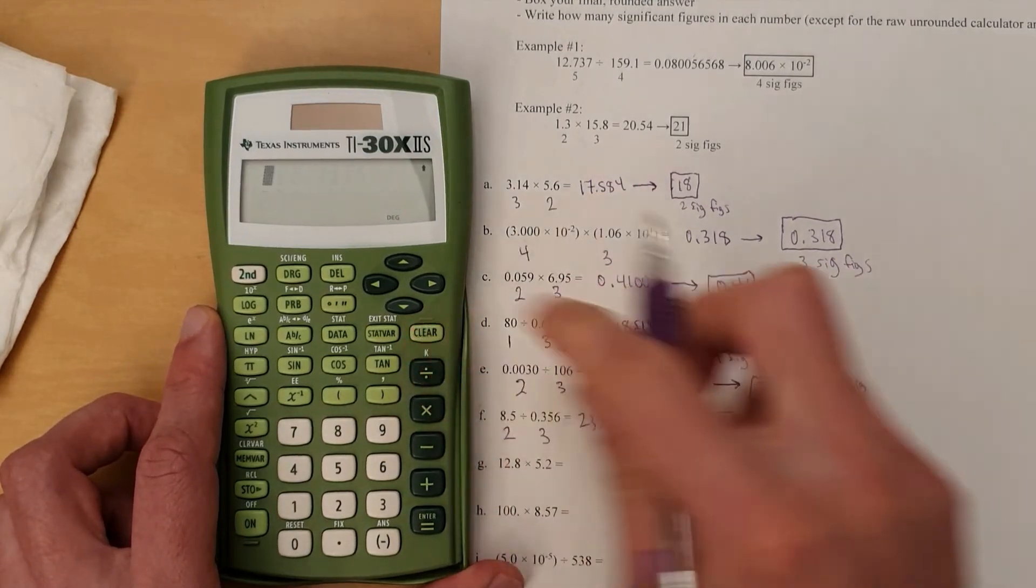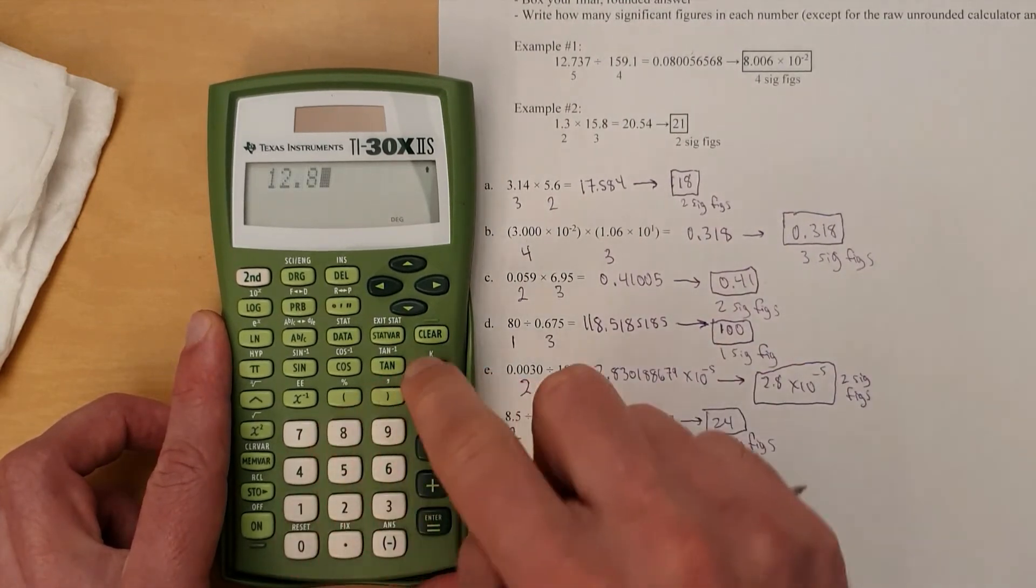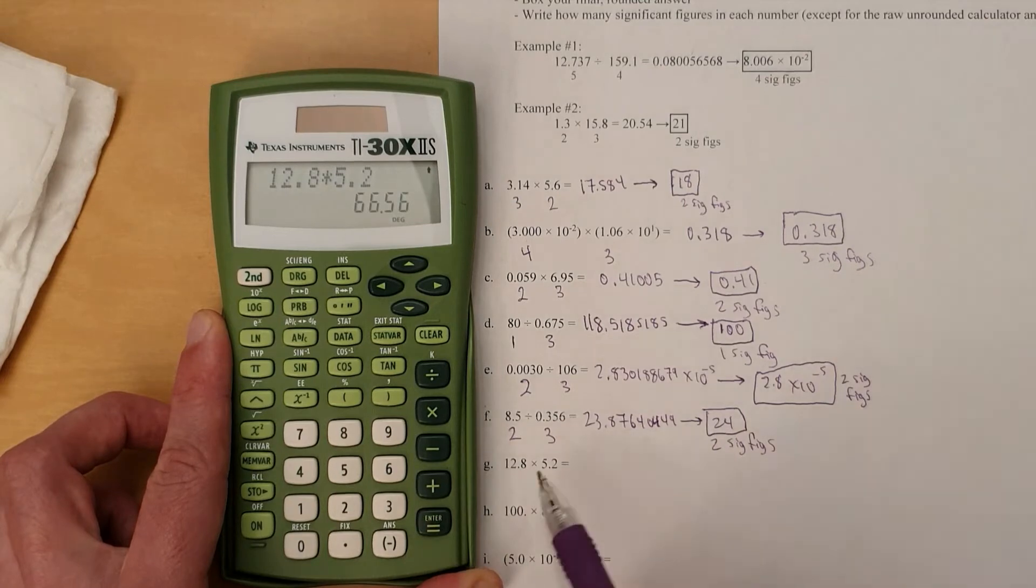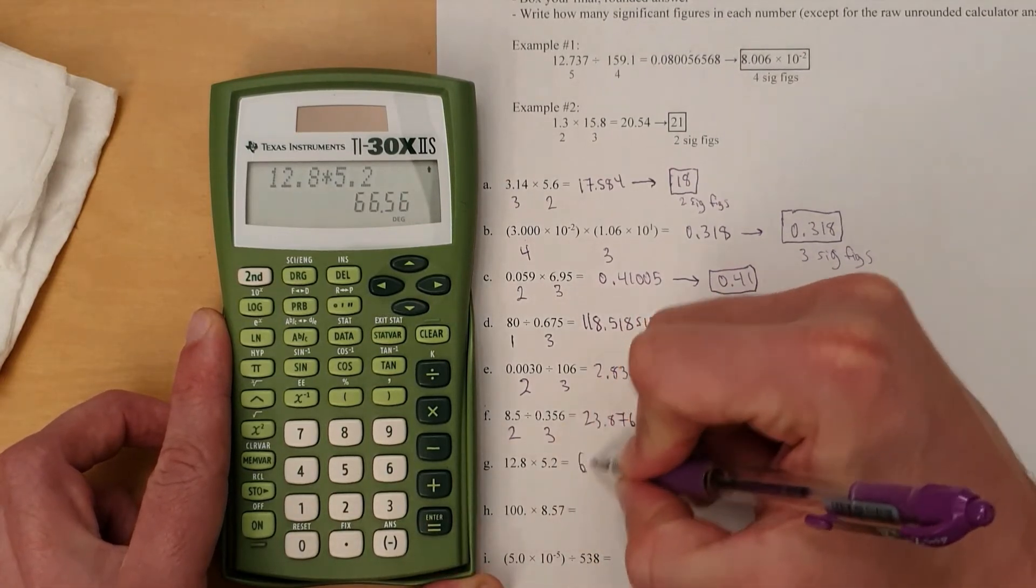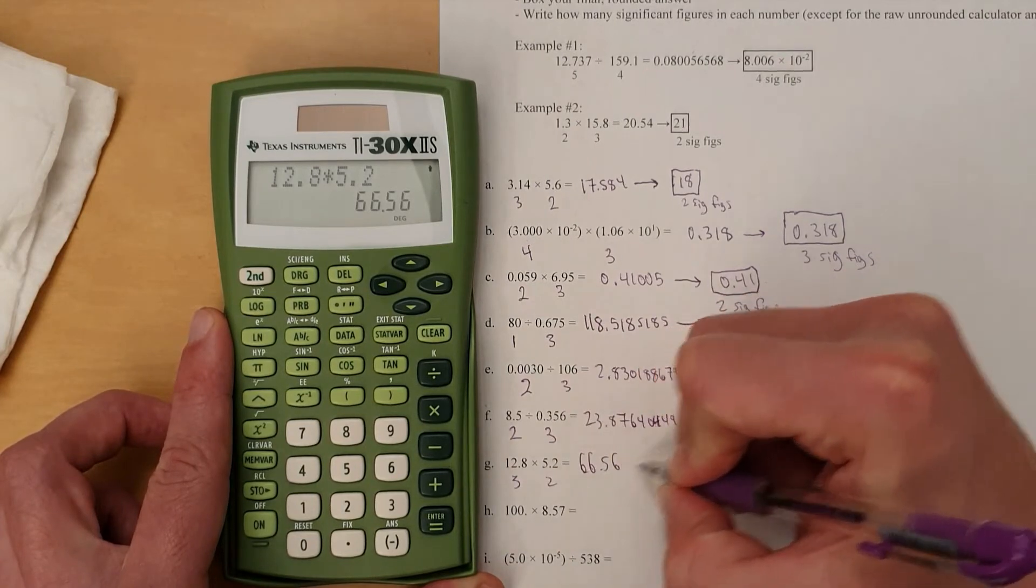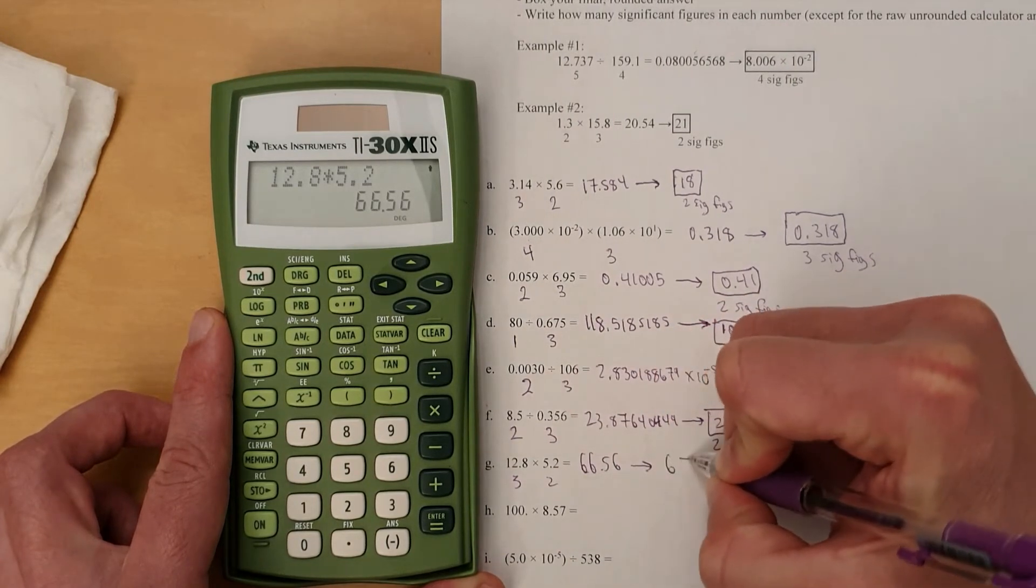All right, here. Oops. 12.8 times 5.2. 66.56. Three sig figs. Two sig figs. Round to two sig figs here. So this becomes 67.